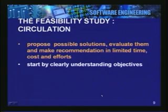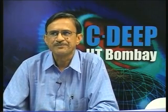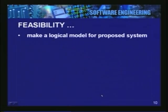We start by clearly understanding the objectives. We have the first problem definition document as a source where we had also identified who are the users. We want to take up the study of the existing system first, where we would like to study what kind of tasks are performed and why the problem is felt - why do we think the present system is inefficient and costly. As we study the existing system and collect more data, we will also try to keep those problems in mind and see whether a logical model can be worked out for the new system.